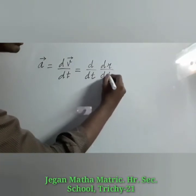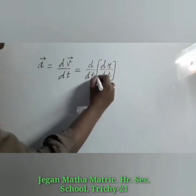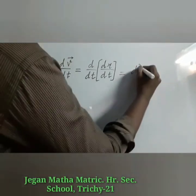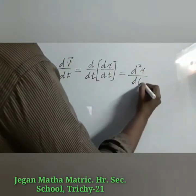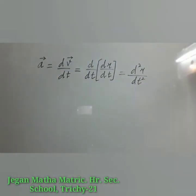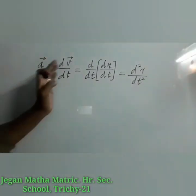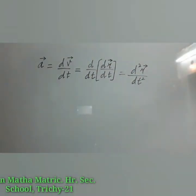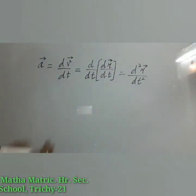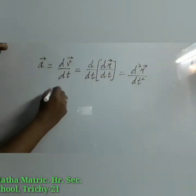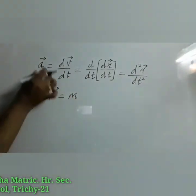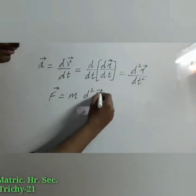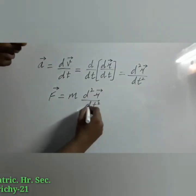So this expression can be written as d²r/dt². We can say that acceleration is the second derivative of the position vector r. Therefore, Newton's second law can also be written as F vector = m·(d²r/dt²).